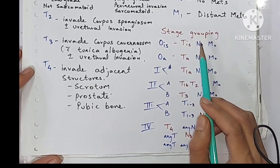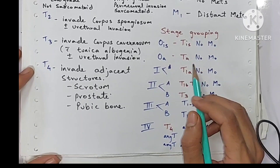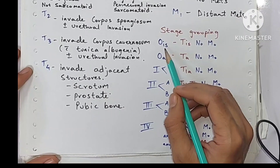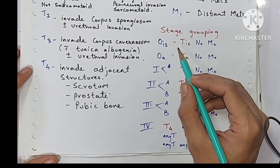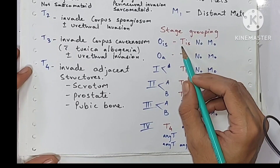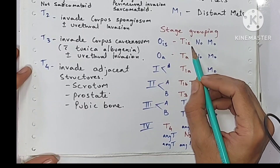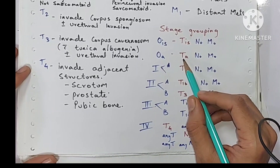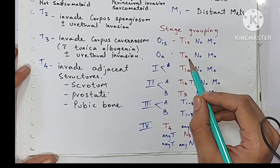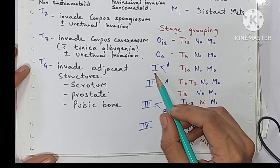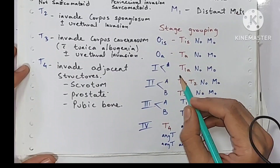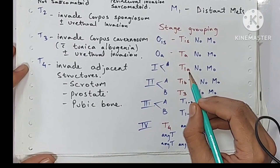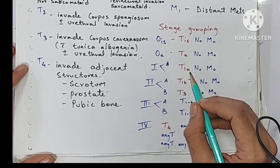For stage grouping of carcinoma penis: Stage 0is is when the tumor is in situ. Stage 0a is when the tumor is of localized SCC variety. Stage 1 is when it is T1a — that is, no lymphovascular invasion, low grade, and non-sarcomatoid cell type.